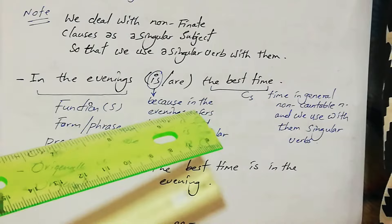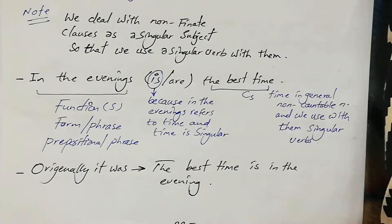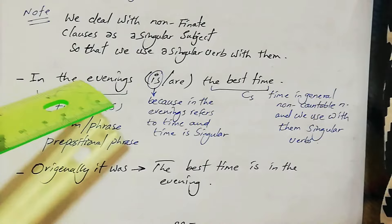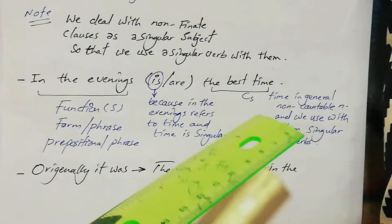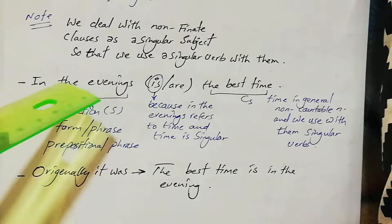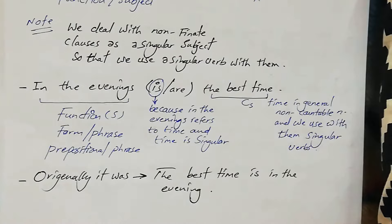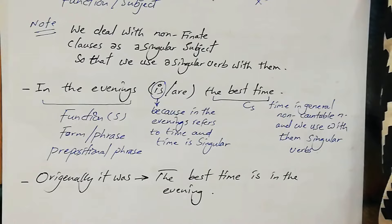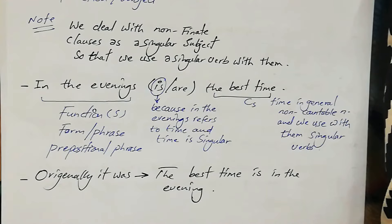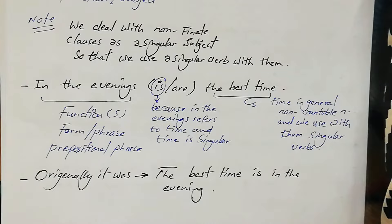'In the evenings is/are the best time.' Originally: 'The best time is in the evenings.' The function of 'in the evenings' is subject; the form is a prepositional phrase. We deal with it by looking at the meaning — 'in the evenings' refers to time in general, which is an uncountable noun. We deal with uncountable nouns as singular subjects, so we use 'is.'